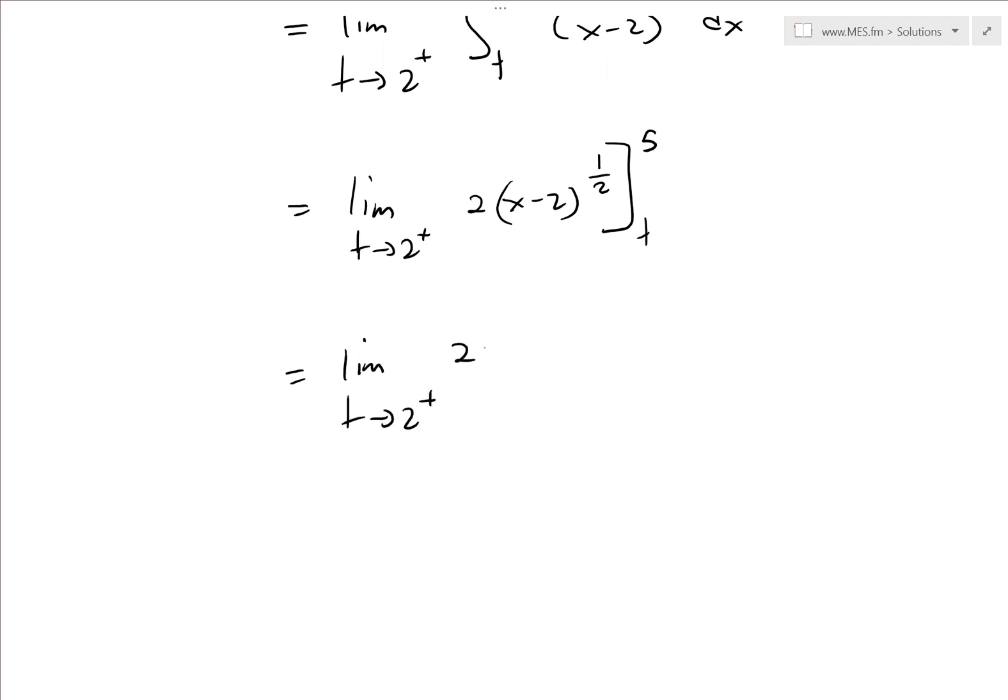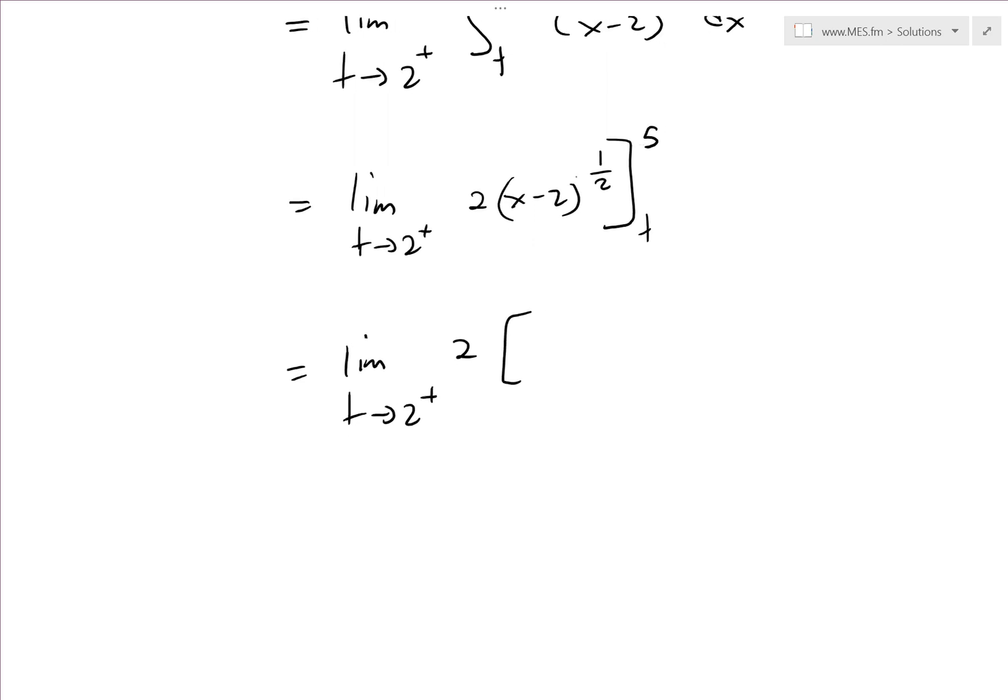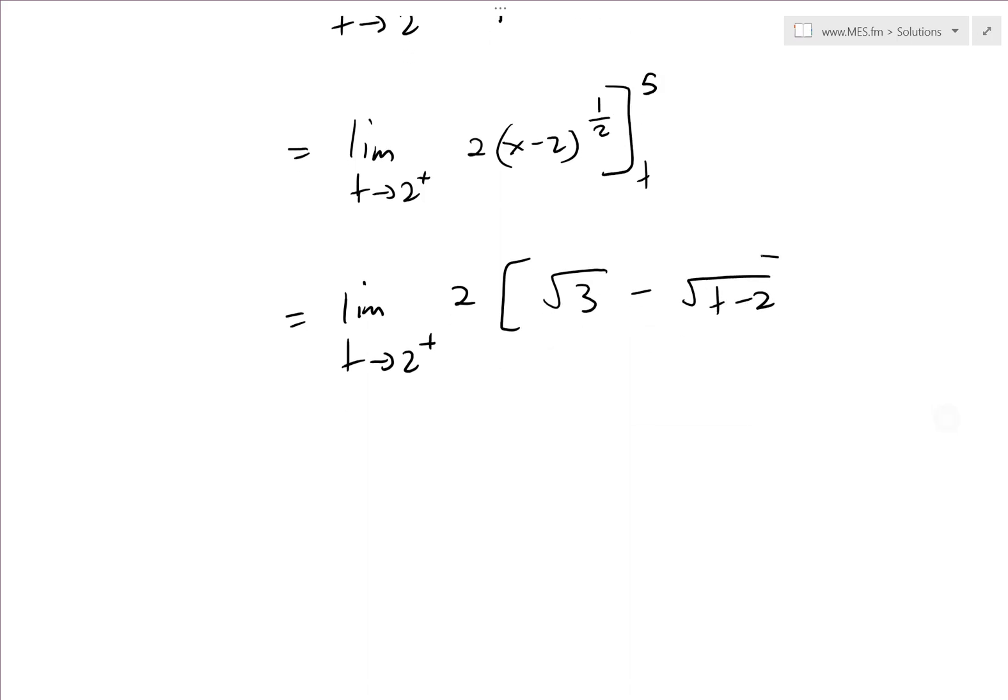When we evaluate this, limit as t approaches 2 plus—put the 5 in there, then there's 5 minus 2, which is 3. 3 to the power 1 over 2 is just square root 3, and then subtract it by 2 times square root of t minus 2.